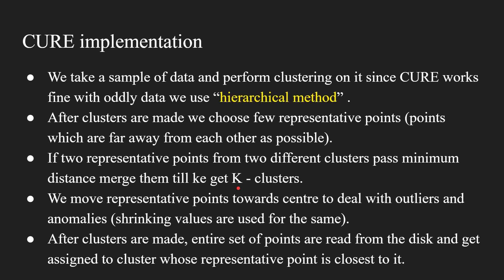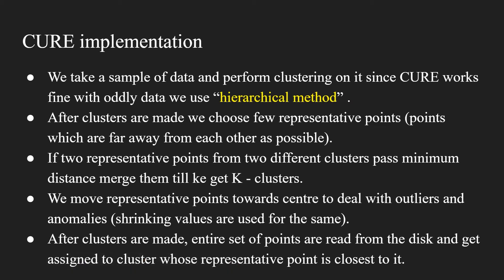K is defined by the user — whether they want 2, 3, or 5 clusters depending on their need. After clusters are formed, we move representative points towards the center to deal with outliers and anomalies; shrinking values are used for this. When we check a new point and assign it to a cluster, we don't want to include outliers. By shrinking representative points towards the center, we ensure outliers remain outside the cluster.